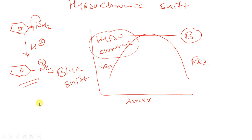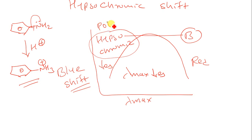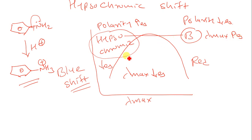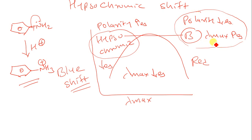Two things to remember for hypsochromic shift: Lambda maximum will be decreasing, and it is also known as blue shift. The polarity will be increasing. In bathochromic shift, polarity is decreasing and Lambda maximum is increasing; in hypsochromic shift, Lambda maximum is decreasing and polarity is increasing. You just have to remember bathochromic shift — whatever is written for bathochromic, just reverse it for hypsochromic.